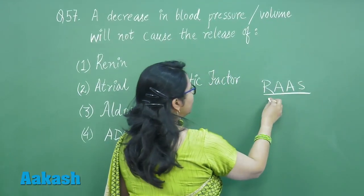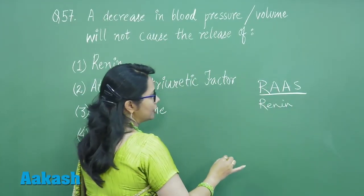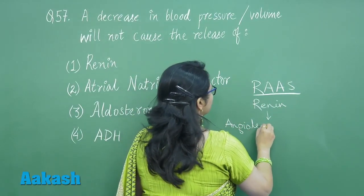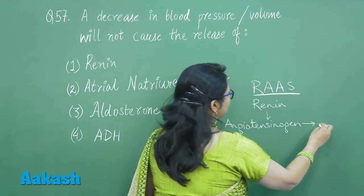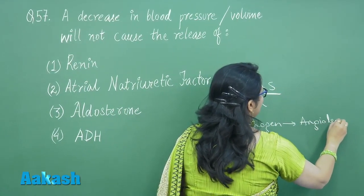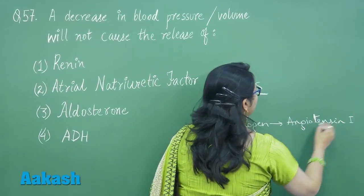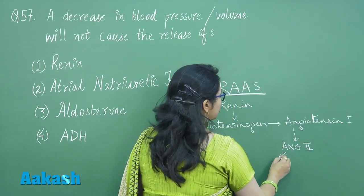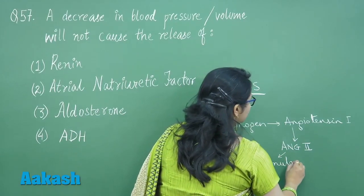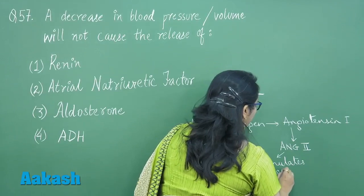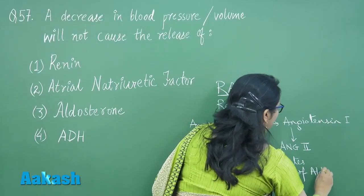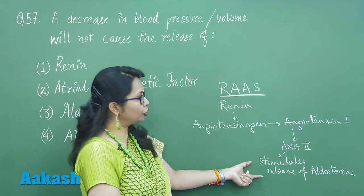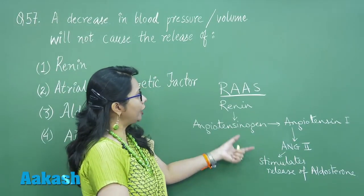Now, this RAS system involves release of renin from the juxtaglomerular cells, which in turn converts angiotensinogen to angiotensin 1, and this angiotensin 1 is further converted to angiotensin 2. This stimulates the release of aldosterone, and aldosterone is responsible for sodium reabsorption.